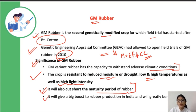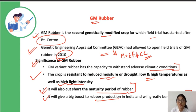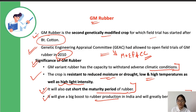GM rubber will give a boost to rubber production in India and greatly benefit farmers by providing additional income. Since it is resistant to extreme temperatures, drought, and high light intensity, this crop can be grown under varied agroclimatic conditions, boosting rubber production across the country.